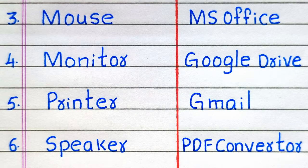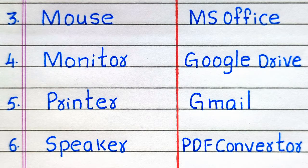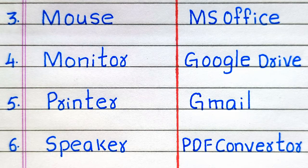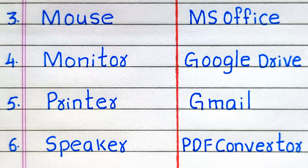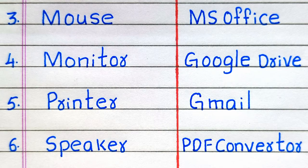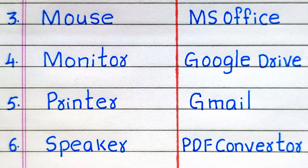Third example of hardware is mouse. Fourth is monitor. Fifth is printer. Sixth is speaker. Third example of software is MS Office, Microsoft Office. Fourth is Google Drive. Fifth is Gmail. Sixth is PDF converter.